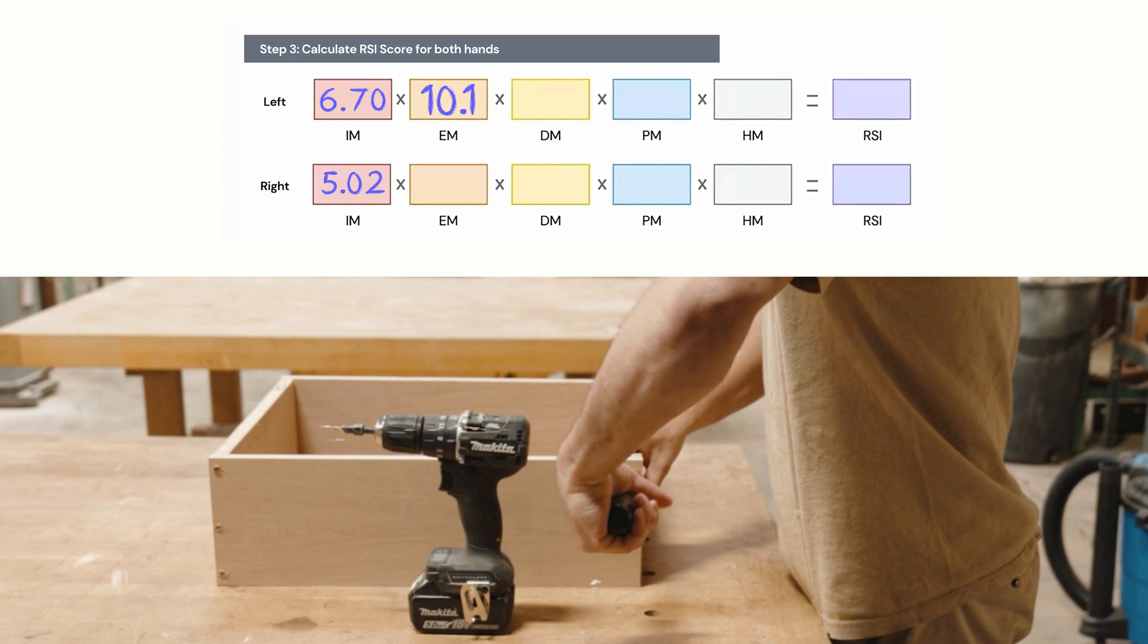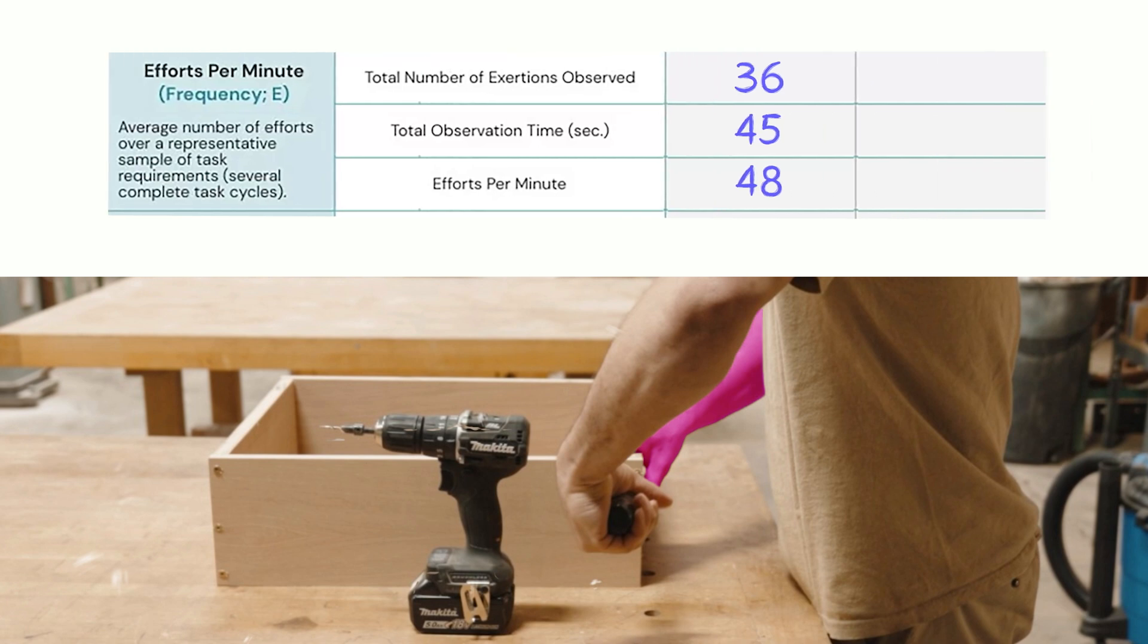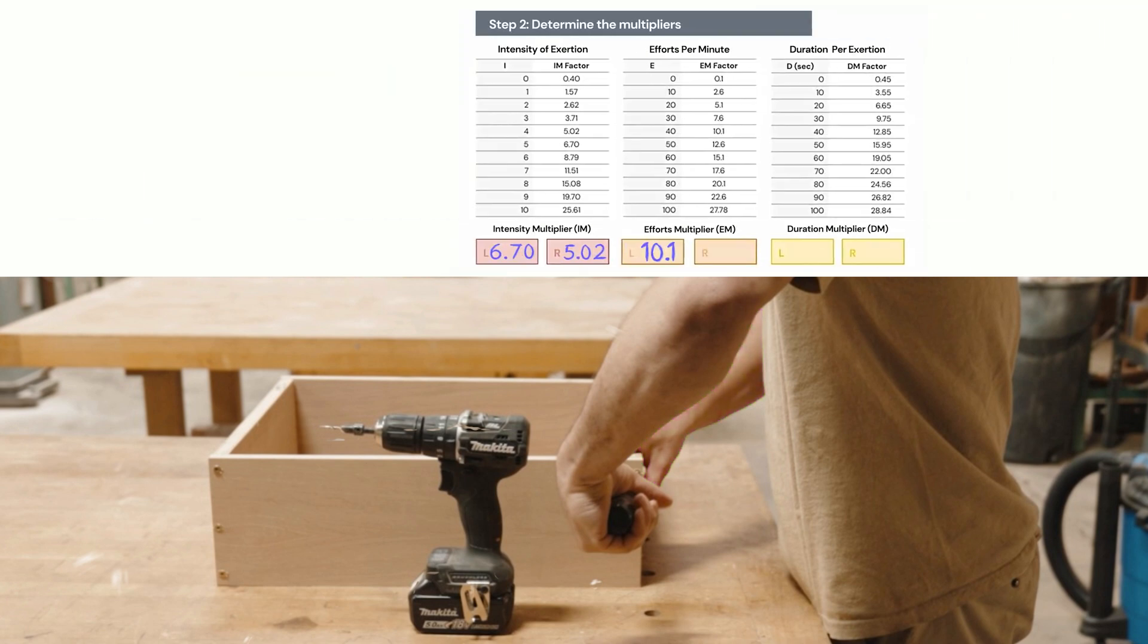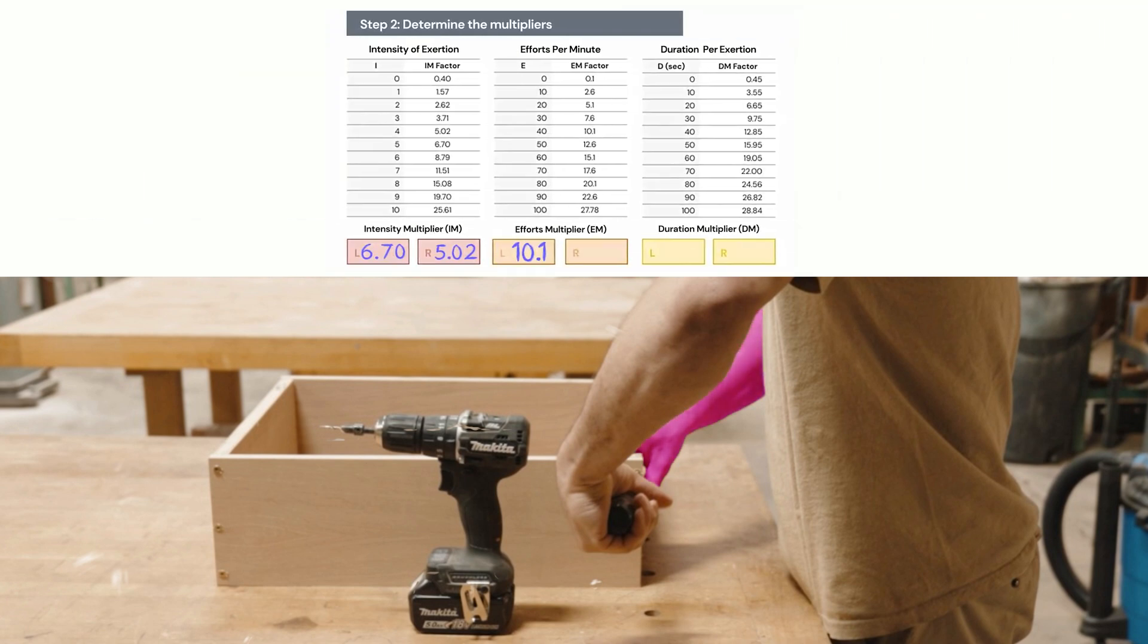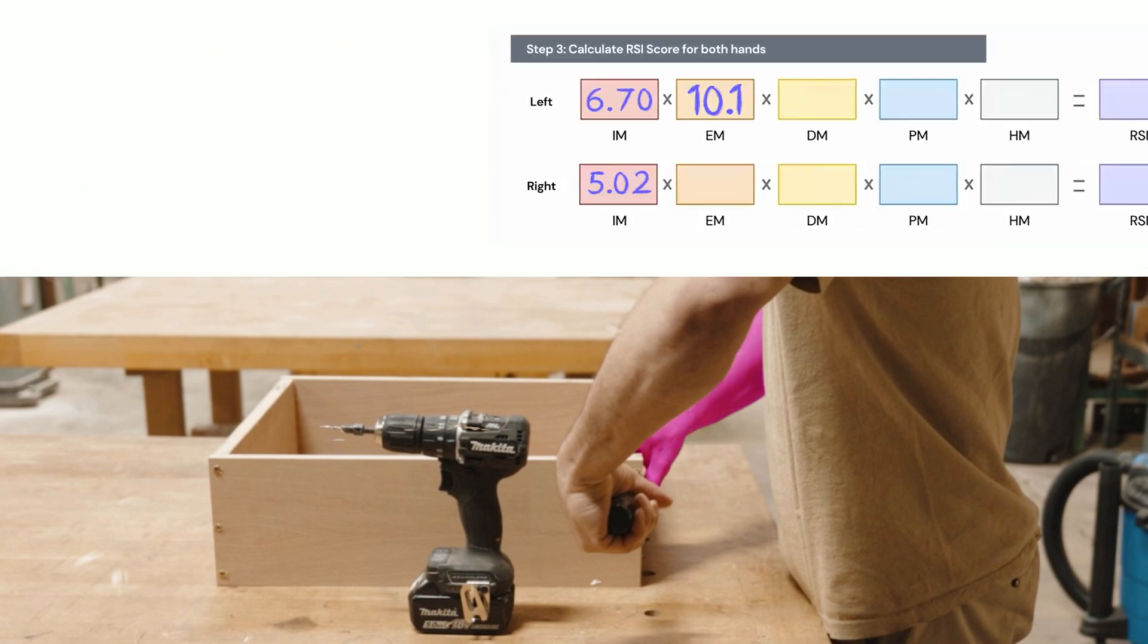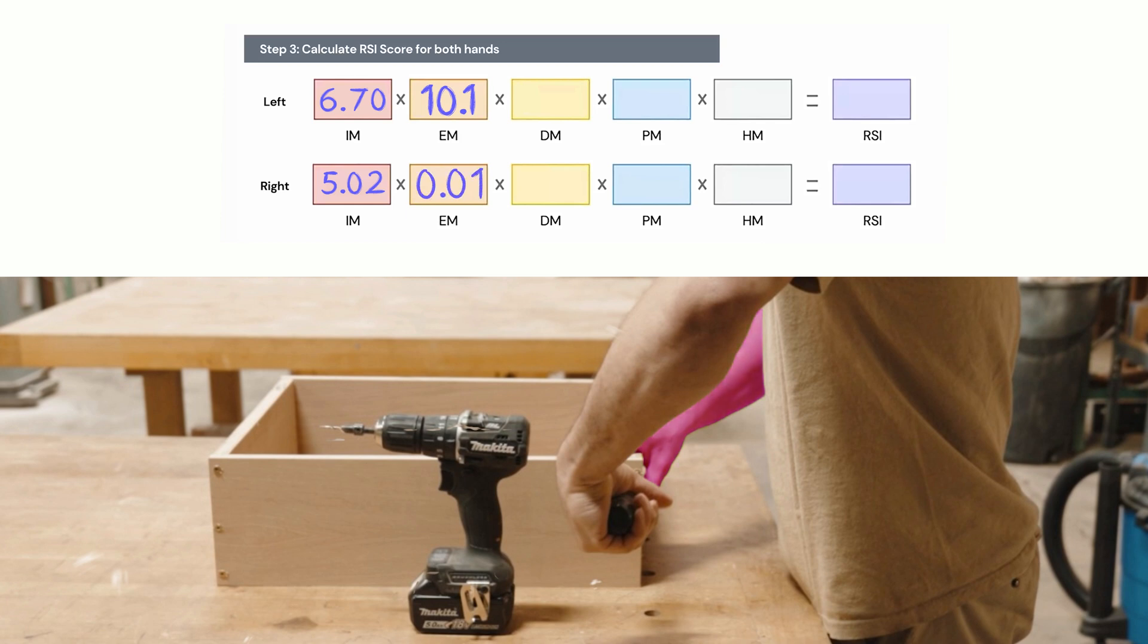Now we loop back around and do the same thing for the right hand. Remember, we're looking at frequency here, efforts per minute. The right hand is somewhat different. He's stabilizing with his right hand. If you'll notice, it's one sustained contraction. So over the 45 second video we watched, it was one contraction. We're going to represent that in that conversion table in step two. We're going to find the zero to 10. We're going to find the appropriate conversion factor. We're going to drop that into the right orange box. And we're going to drag that into step three, the orange box for the right hand.